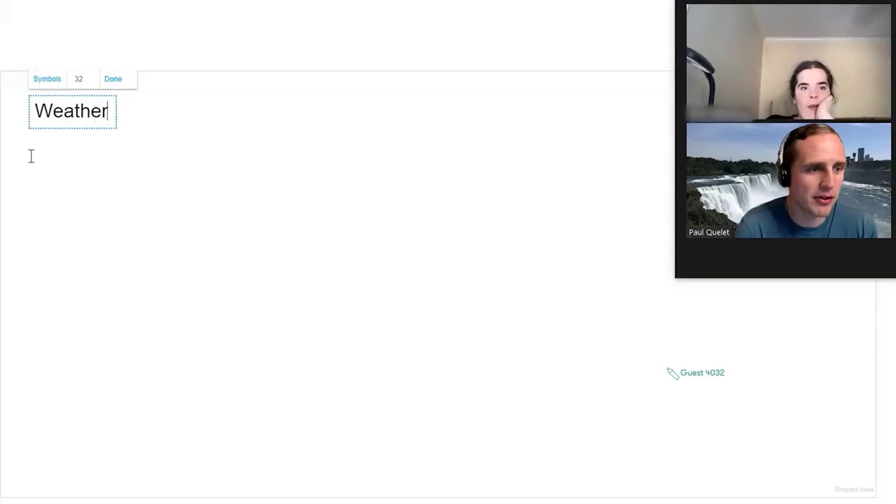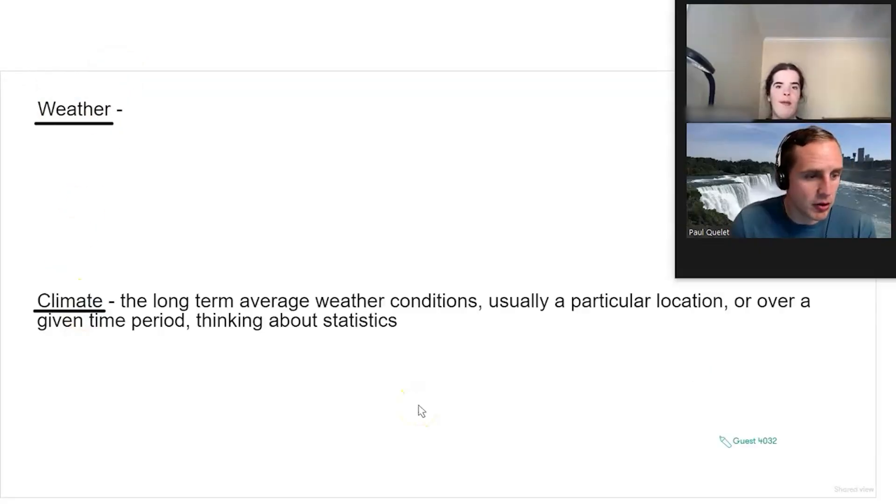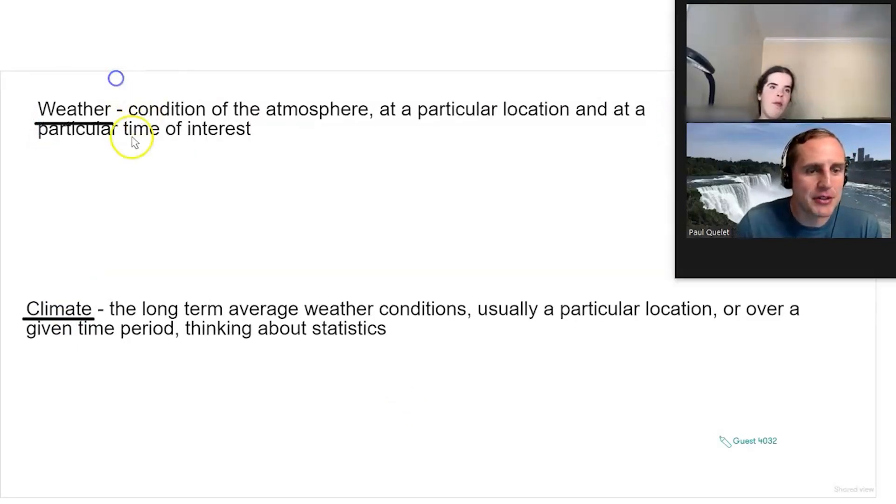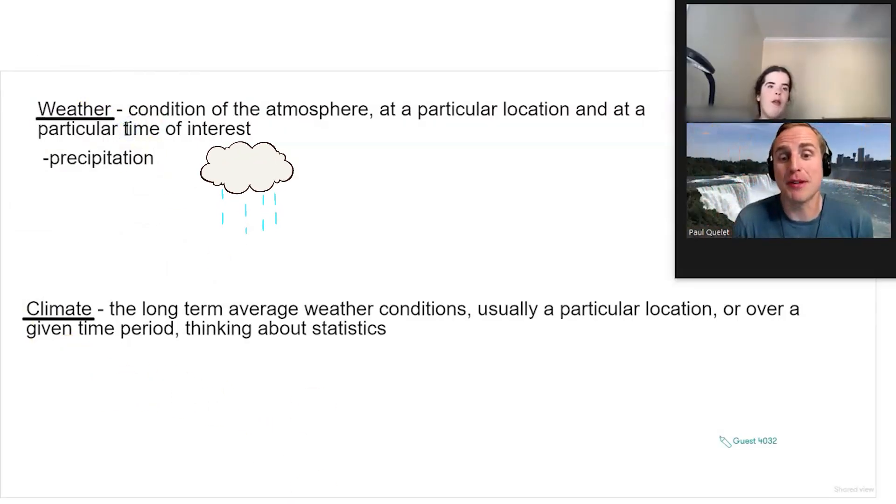The difference between weather and climate. Climate is the long-term average weather conditions, usually at a particular location or over a given time period, thinking about statistics. So how would you define weather? I would say it's the condition of the atmosphere at a particular location at a particular time of interest. If it's raining, that's the what? The more general term is precipitation.